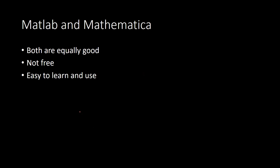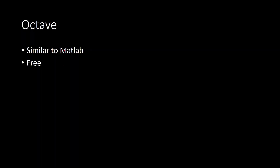MATLAB and Mathematica are similar proprietary softwares with lots of good support, similar to SAS — not free but easy to learn and use. They are alternatives to SAS, but SAS is more used in industry, so you have more job options with SAS compared to MATLAB and Mathematica. Octave is very similar to MATLAB — it's essentially a free version of MATLAB. MATLAB requires a paid license, but Octave is free to download.